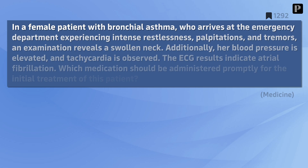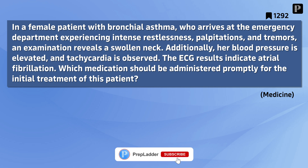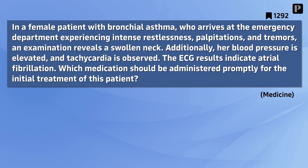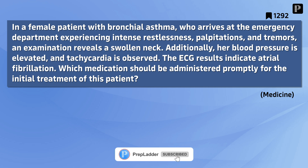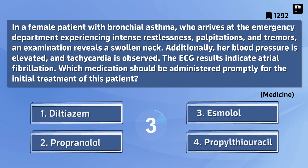Question 2: In a female patient with bronchial asthma who arrives at the emergency department experiencing intense restlessness, palpitations, and tremors, examination reveals a swollen neck. Her blood pressure is elevated and tachycardia is observed. ECG results indicate atrial fibrillation. Which medication should be administered promptly for the initial treatment of this patient? The correct answer is Diltiazem.